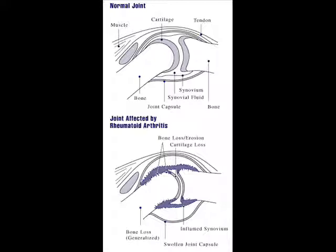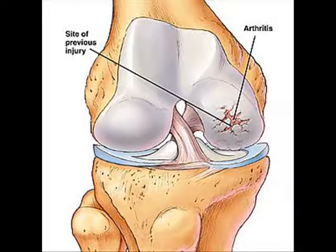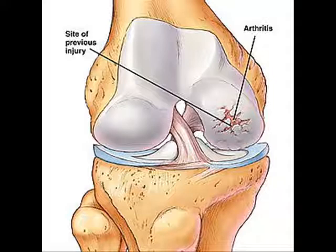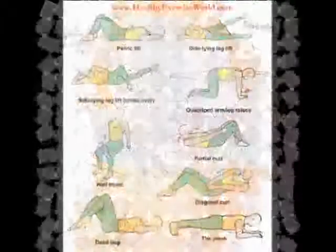Rheumatoid arthritis of the temporomandibular joint is treated with the drugs used for rheumatoid arthritis of any joint. These may include analgesics, corticosteroids, methotrexate, and gold compounds. Maintaining joint mobility and preventing ankylosis — the fusion of the joint — are particularly important. Usually the best way to accomplish these goals is by exercising under a physical therapist's direction to relieve symptoms, particularly muscle tightness.